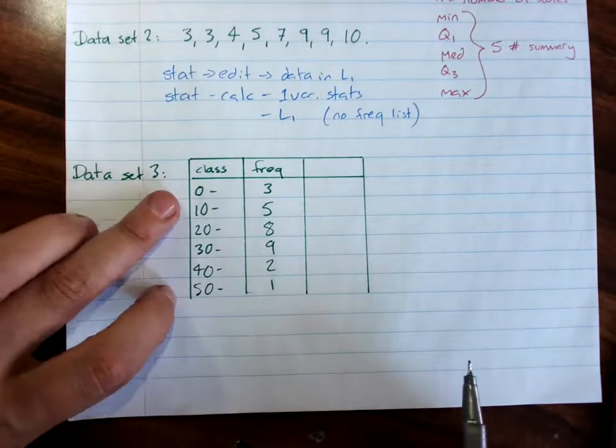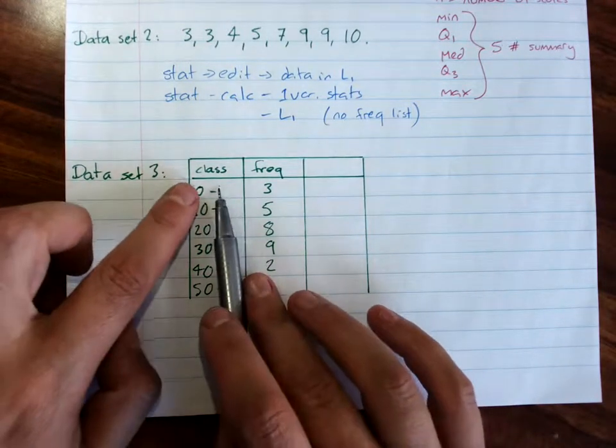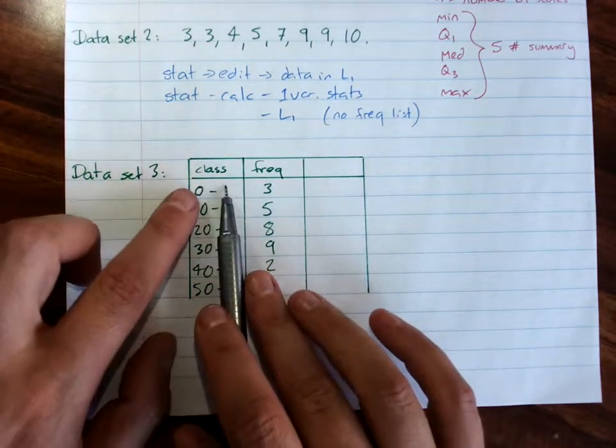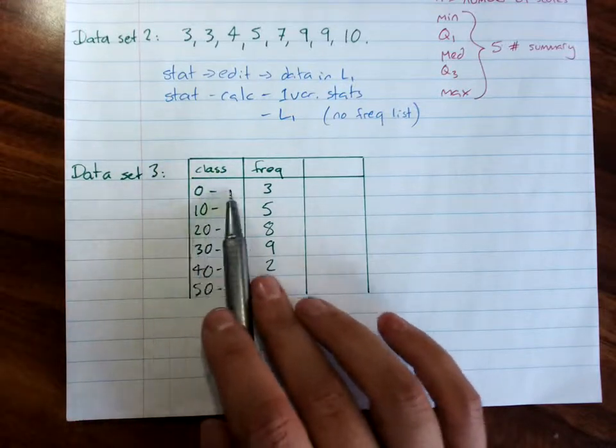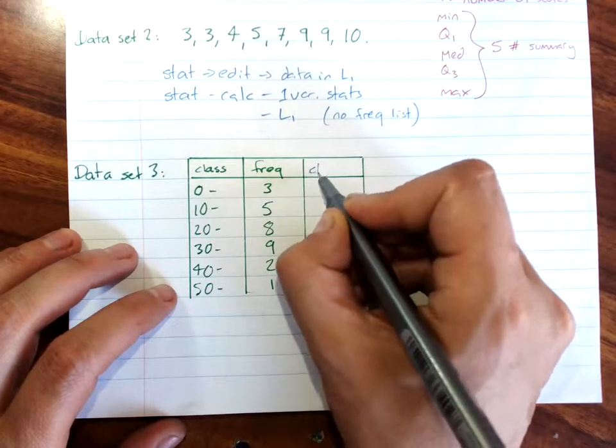Now if you're dealing with grouped data, the one thing that we can't do is we can't put in a score based on this, because it's a range. So we use what's called the class center or the midpoint.